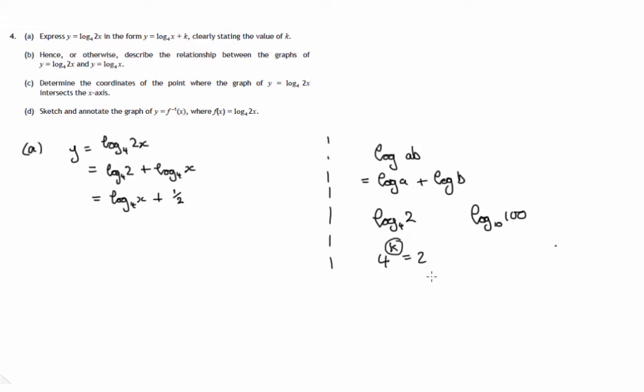We could write k equals log to the base 4 of 2, rewriting it as a power statement. 4 to the power of k equals 2. We could deal with the 4 as being 2 squared. And say we've got something raised to a power raised to a power. We multiply these indices. We'll get 2 to the power 2k equals 2 to the power 1. Therefore, the two powers must be equal. 2k equals 1. Therefore, k equals a half.